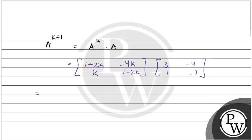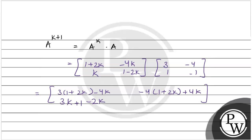Multiplying first row by first column: 3(1+2K) + (-4K)(1) = 3+6K-4K. First row by second column: -4(1+2K) + (1)(-4K) × (-1) gives -4-8K+4K. Second row first column: 3K + (1-2K) = 1+K. Second row second column: -4K + (-1)(1-2K) = -4K - 1 + 2K, giving bracket 1 - 3K.